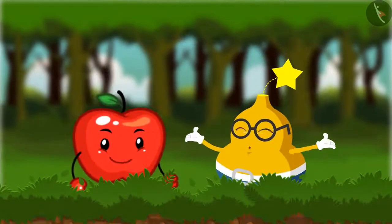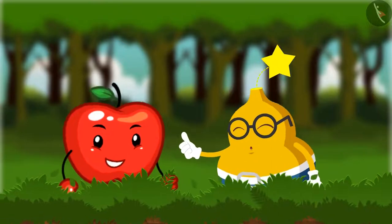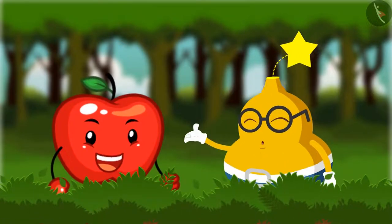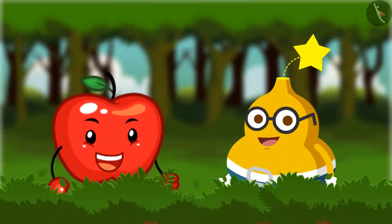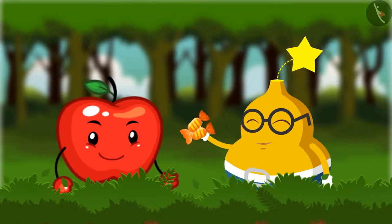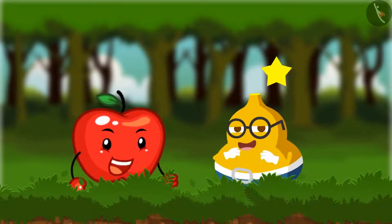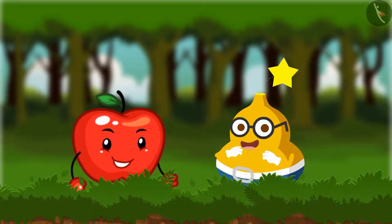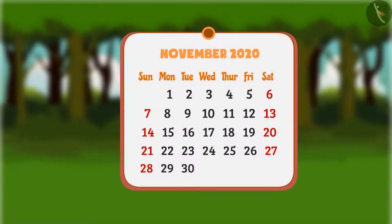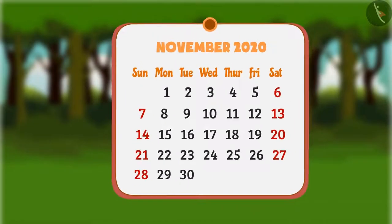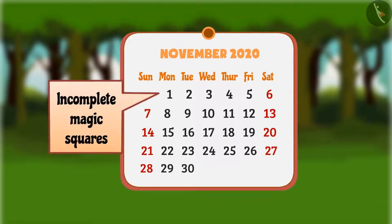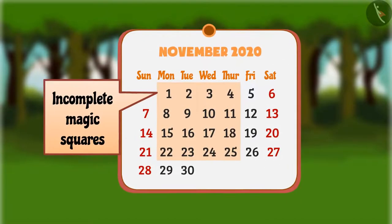Fruity says: fabulous Api, you deserve a reward for this knowledge — take these candies! Api says: thank you Fruity. So students, I hope you understood about incomplete magic squares in a calendar. See you later!